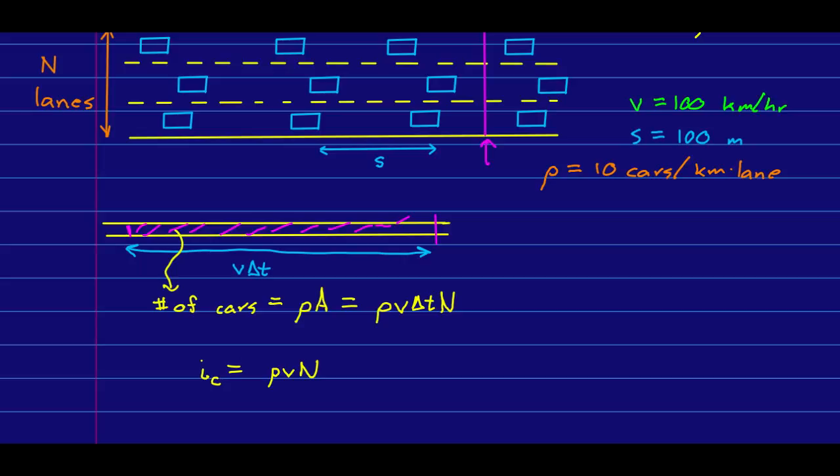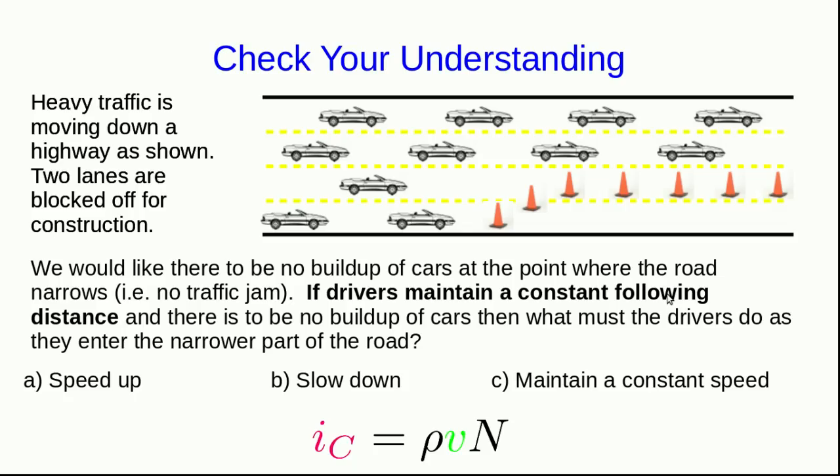And note that that has the form we expect for a flux. It contains a density, a speed, and the number of lanes is not a cross-sectional area, but it's analogous to a cross-sectional area.